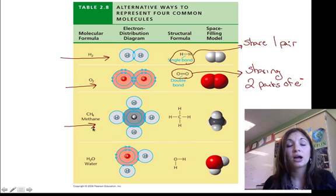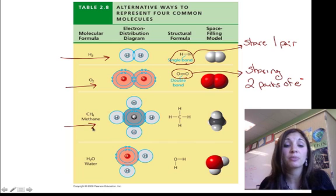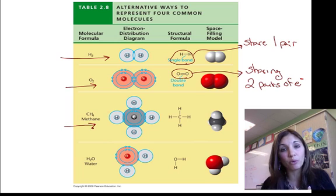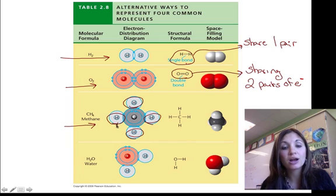Hydrocarbons: compounds form with hydrogen and carbon. Carbon has four valence electrons. It needs four more. So if it bonds with four hydrogens, one, two, three, four, then everyone's happy. Everyone's full and satisfied.